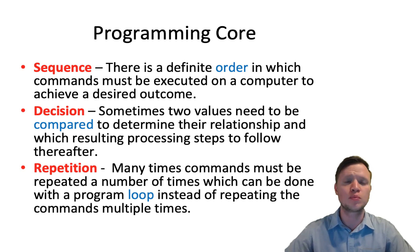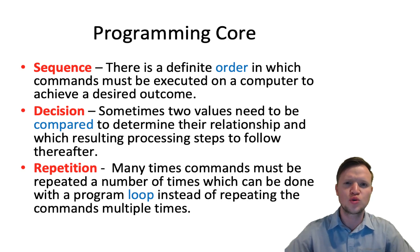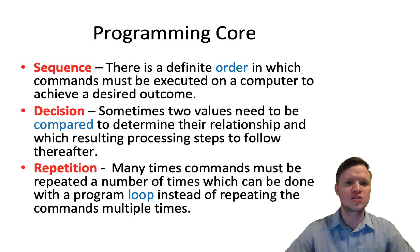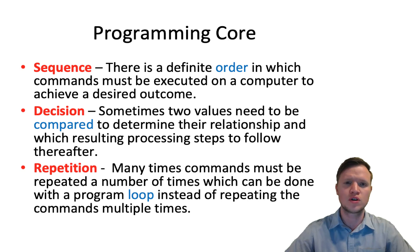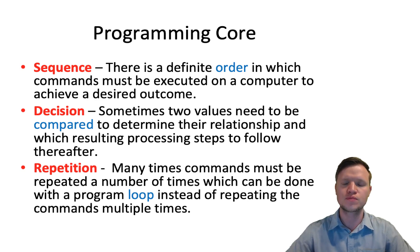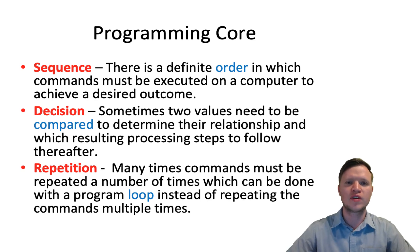Then they found that certain sets of instructions need to be repeated quite often — that's repetition. We use repetition structures to repeat certain sets of statements for a certain number of times. That's very important and we need that in certain algorithms. So the three programming cores are sequence, decisions, and repetition.